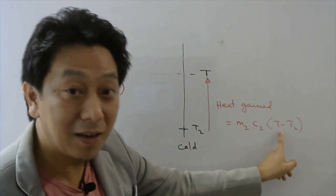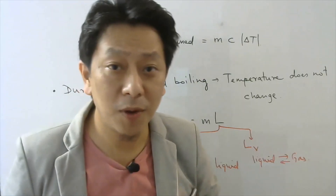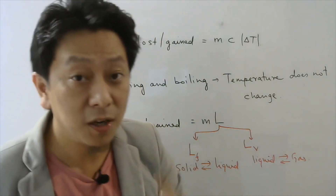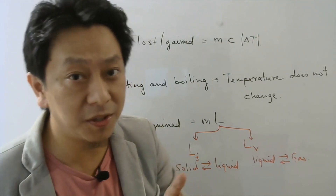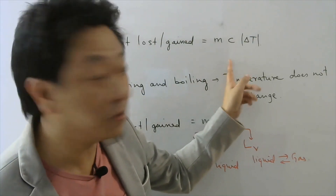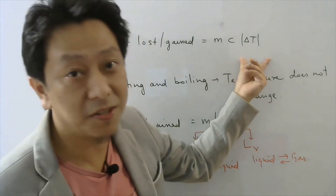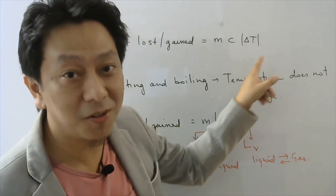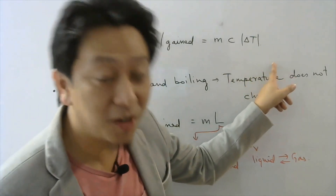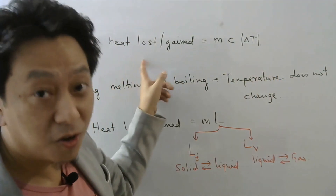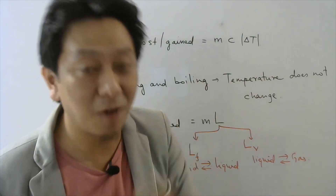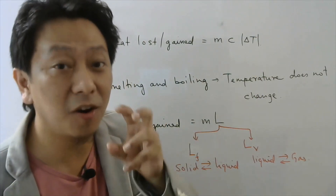When a body gains or loses heat to change its temperature, the formula is: Q = mass × specific heat × |ΔT|. The modulus ensures you always write bigger temperature minus smaller temperature, so heat lost or gained is a positive number.